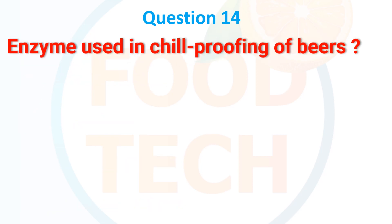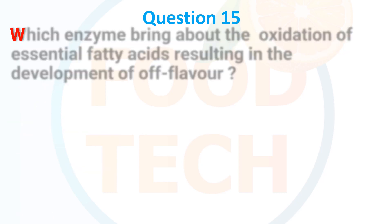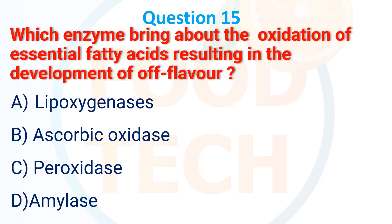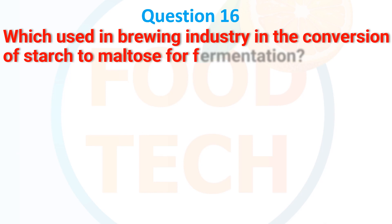Enzyme used in chill-proofing of beer: A. Ligase, B. Protease, C. Pectinase, D. Amylase. The answer is B. Protease. Which enzyme brings about the oxidation of essential fatty acids resulting in the development of off-flavor? A. Lipooxygenase, B. Ascorbic oxidase, C. Paradoxes, D. Amylases. The answer is A. Lipooxygenase.